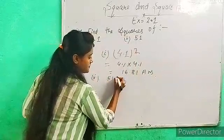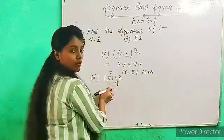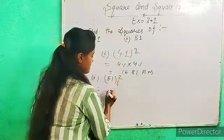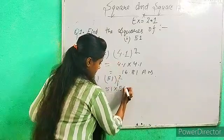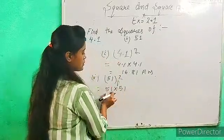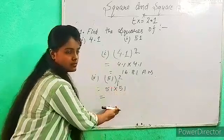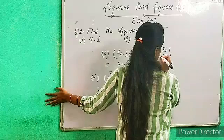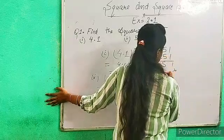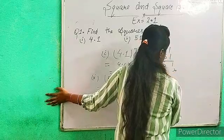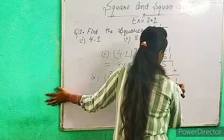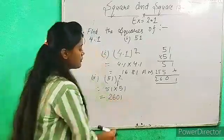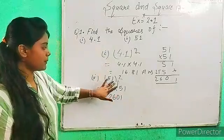Second example: find the square of 51. 51 to power 2 means 2 times multiply, just like the previous example. 51 into 51 — so 2 times multiply and we get the answer.